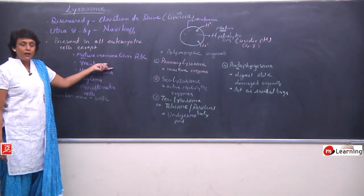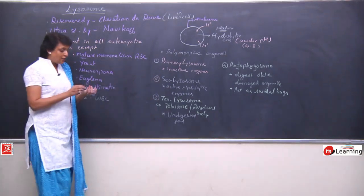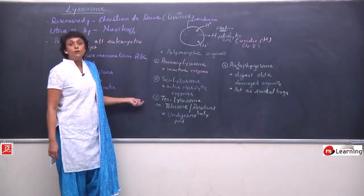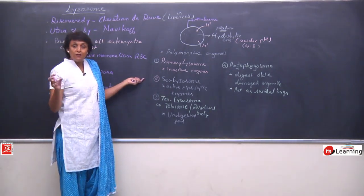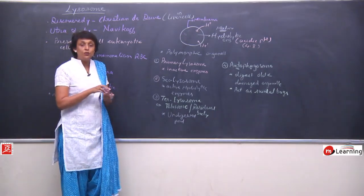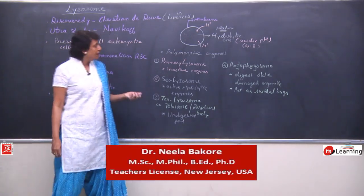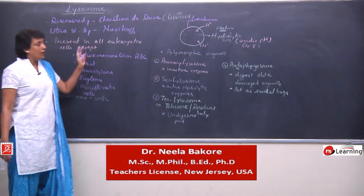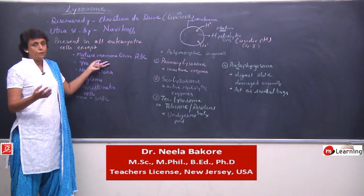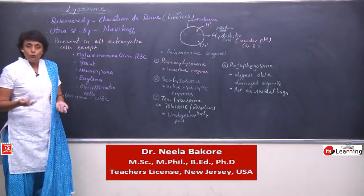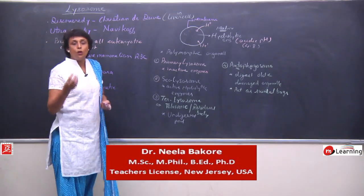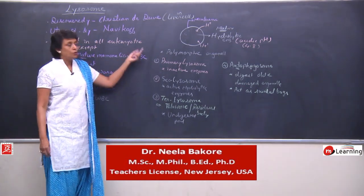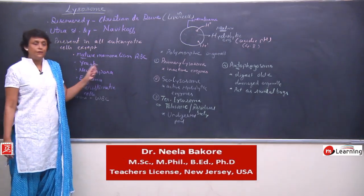Lysosomes are a very simple organelle — just a spherical body with four forms. Because they help in removal of all these things, if they do not remove these things, those particular substances remain in the cytoplasm and result in metabolic disorders — that would be a malfunctioning of lysosomes. So now we have done more membranous structures: mitochondria, Golgi body, ER, and lysosomes. We will take up the other important organelles as well.